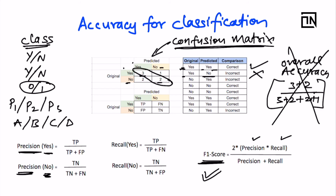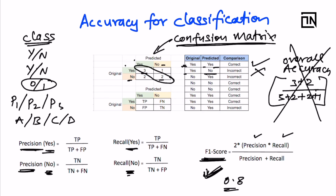What we really care about is how well both classes are predicted. We measure precision and recall for the 'yes' class and the 'no' class individually, then combine them into an F1 score calculated separately for each class. If the F1 score is 0.8, then out of 100 predictions, 80 would be correct, comprising both 'yes' and 'no' cases. F1 score is the preferred metric; overall accuracy may give a rosy picture but misses the point of examining each class.